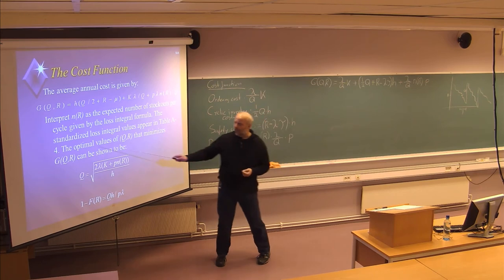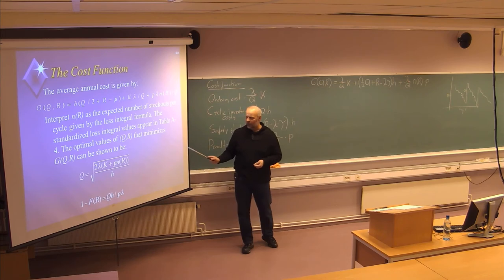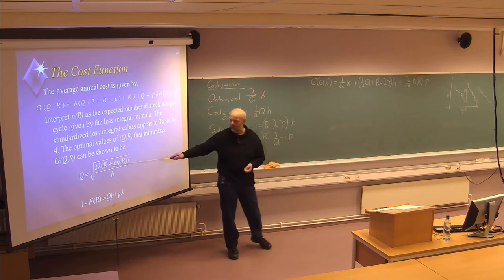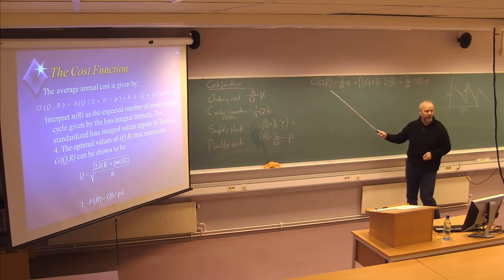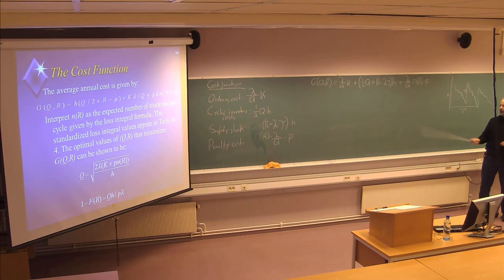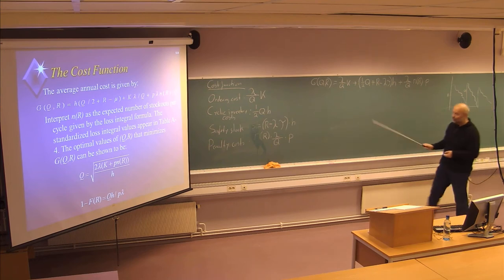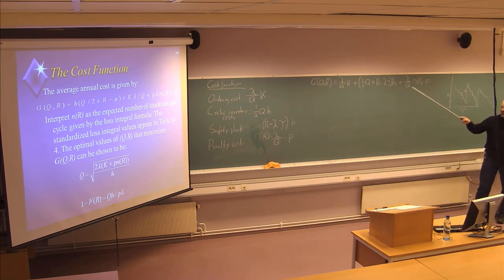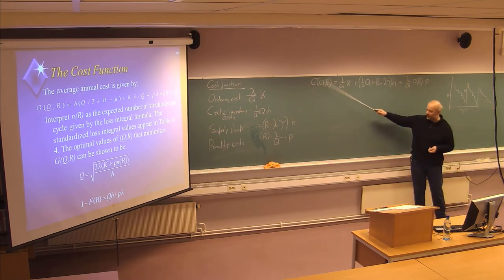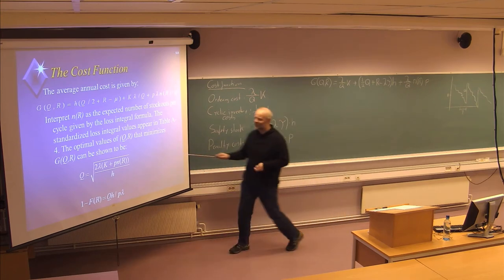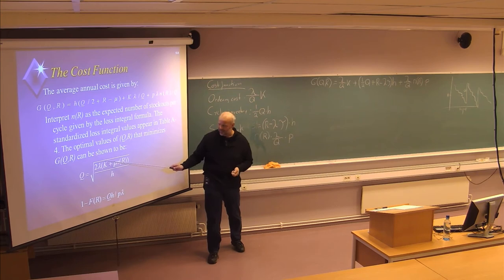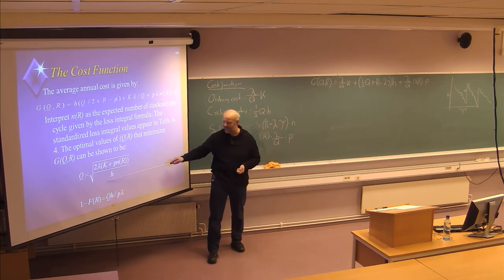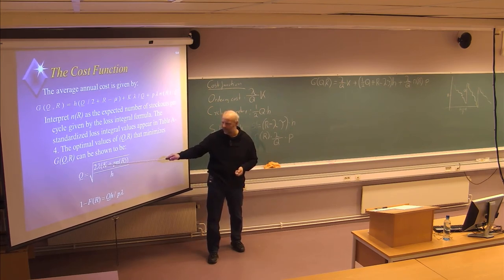We can find formulas for the optimal values of Q and R by deriving the cost function with respect to Q and then with respect to R. I won't go into the derivation details here — at the master level we analyze them in full — but these formulas are proven correct. The optimal Q value is found from a formula similar to the EOQ (square root of 2λK/H), but now with an additional term inside the square root: the penalty p multiplied by N(R).